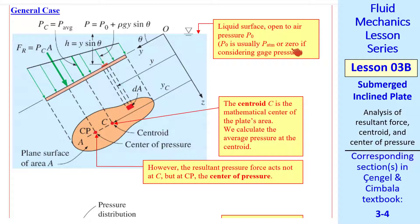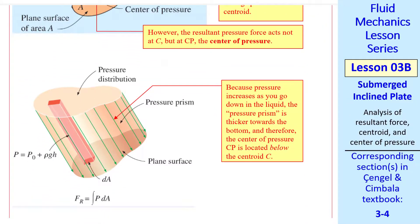We'll usually set P naught to 0, because we'll consider gauge pressure. Centroid is the mathematical center of the plate's area. So because of the linear nature of hydrostatic pressure, the average pressure will always occur at the centroid, regardless of the shape of the plate. Of course, the resultant pressure force acts not at C, but at CP, the center of pressure, which is always lower than C.